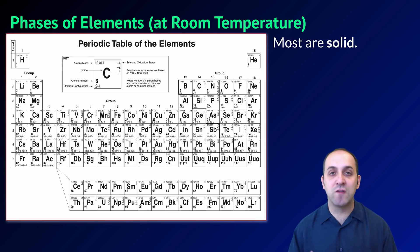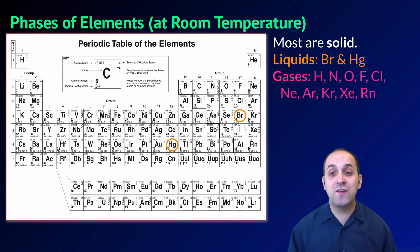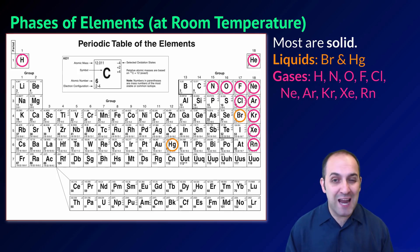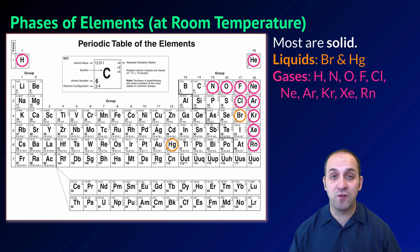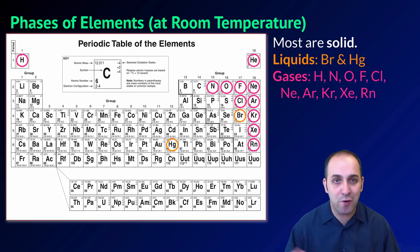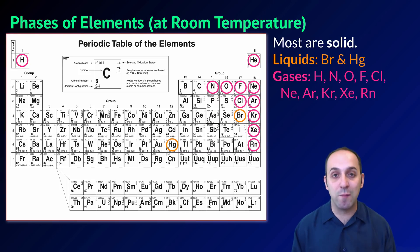Another way to think about the elements is in terms of their phases at room temperature. Most are solids. However, there are two liquids — bromine, a nonmetal, and mercury, a metal. And there are 10 gases: hydrogen, nitrogen, oxygen, fluorine, chlorine, and everything in group 18. If you ever forget this, you can go to reference table S, which lists the melting points and boiling points of the elements. If room temperature — approximately 298 degrees Kelvin — is above the element's boiling point, it's a gas; if it's between its melting and boiling points, it's a liquid; and if it's below the melting point, it's a solid.